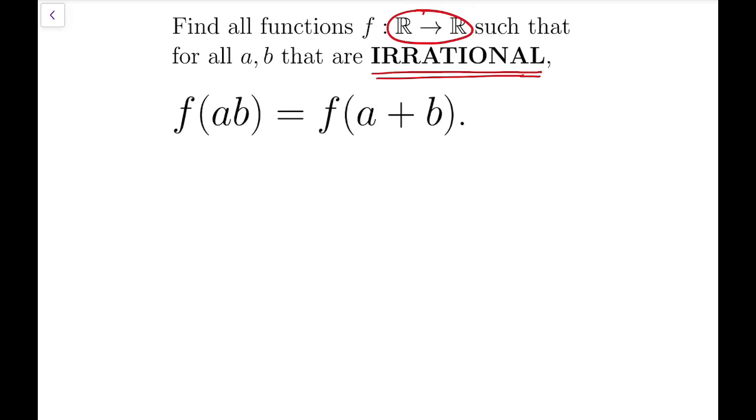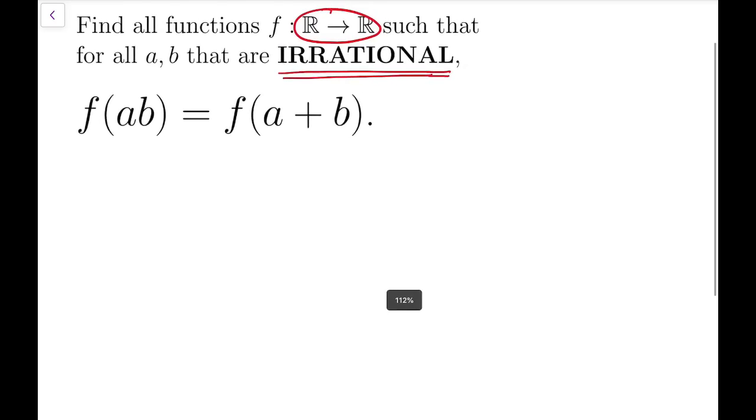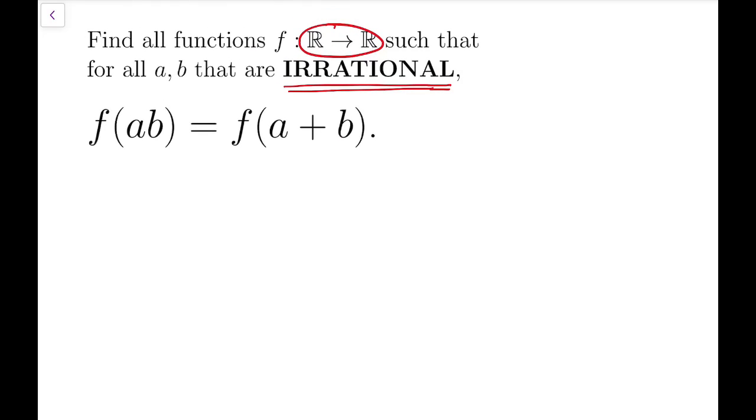This is even stranger than only restricting to rational numbers because for rational numbers, we know that by definition, those are numbers that can be written in the form of a fraction. So we can always replace a equals p by q, something like that, but not now, because we are talking about irrational numbers, just those numbers that cannot be written in the form of fractions.